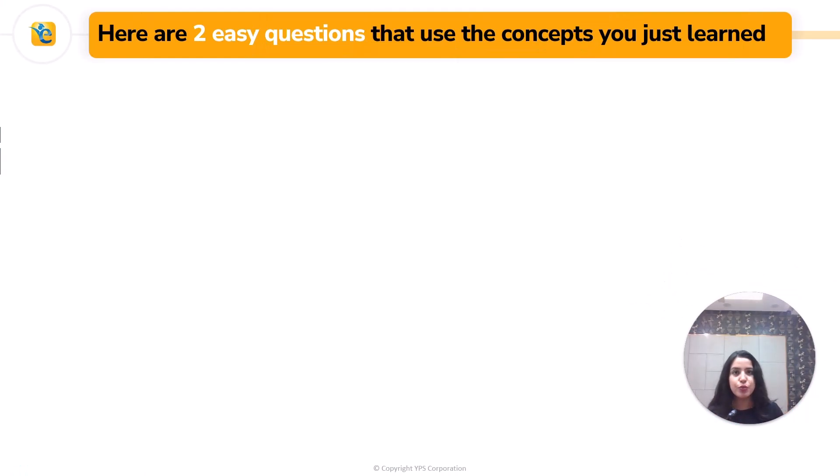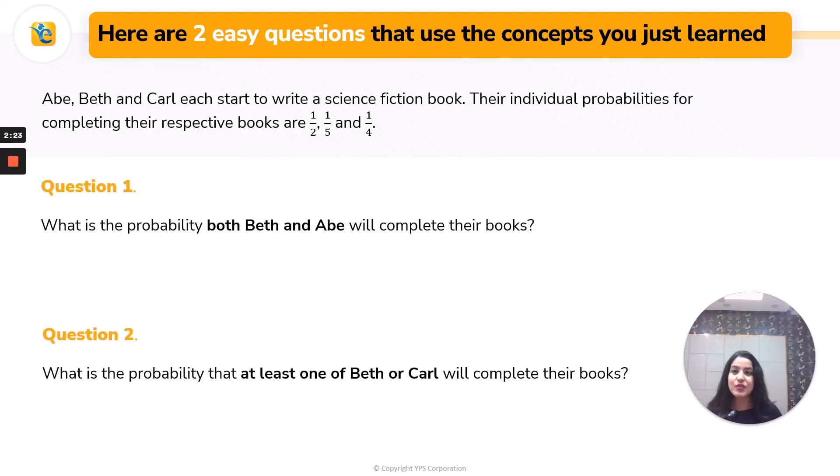Now I'm giving you two easy questions that use the very concepts you just learned. Here are two questions. Read the situation: Abe, Beth, and Carl start writing a science fiction book. Their individual probabilities of completing the books are given. First is the probability that Beth and Abe complete. As we just learned in our concepts, here you multiply. And the second is at least one of them. Again, directly from the concepts, here you use this formula. And that's it. Here you get the answers. This is a simple application of the concepts that you saw.